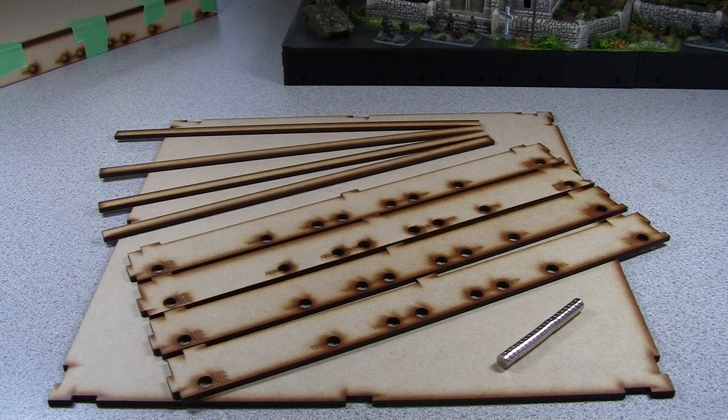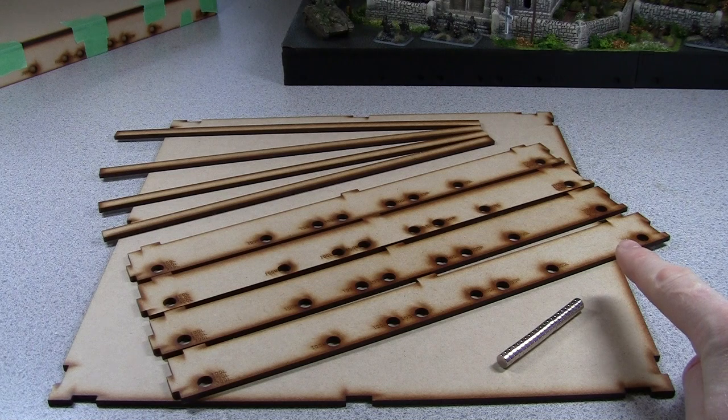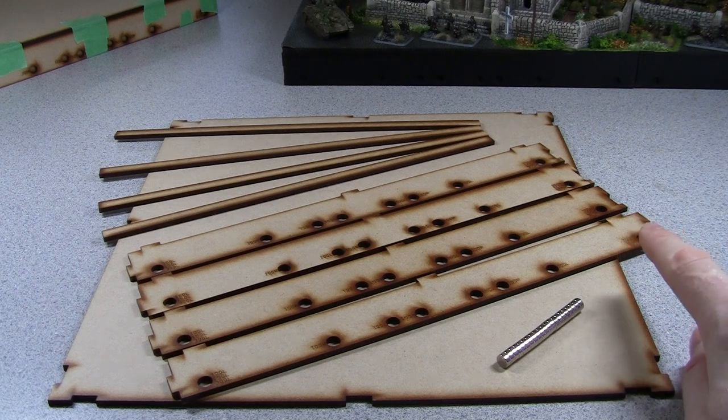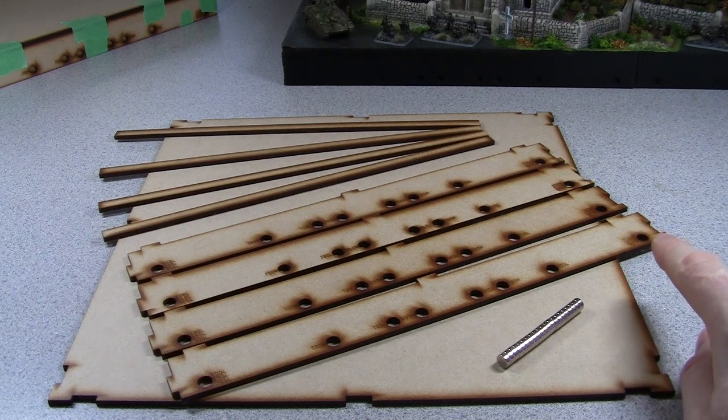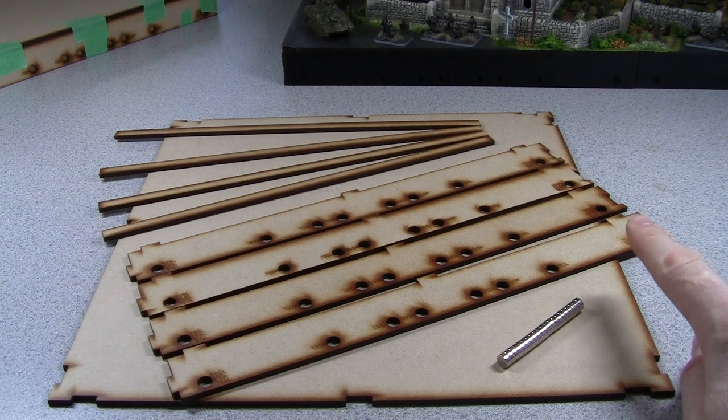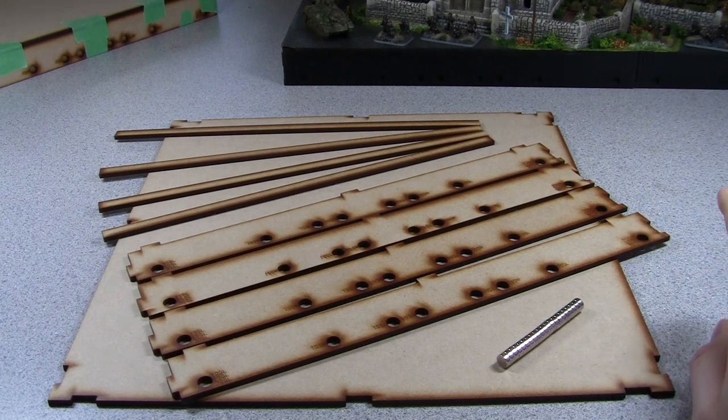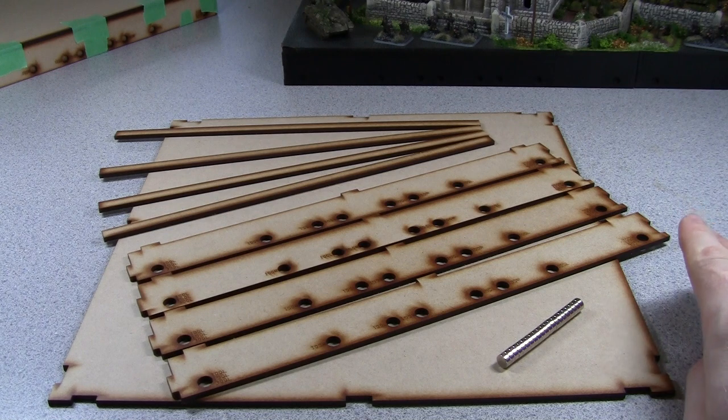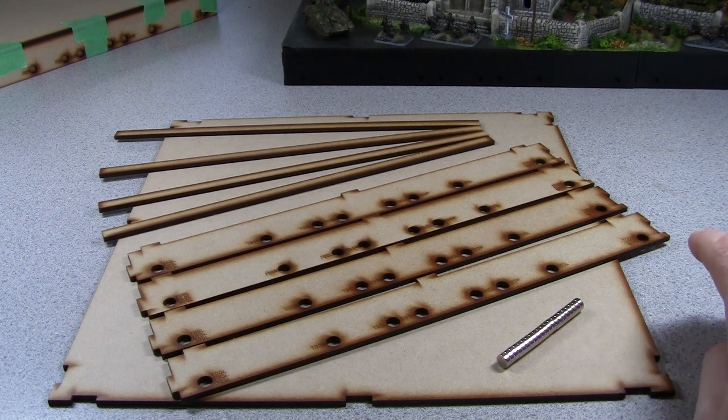The tiles themselves come in various heights. This one here shown is the 33mm height. It does come lower at 16mm, and in 63 and 93mm. The beauty of the system is that all the heights and all the different sizes of the tiles work together.